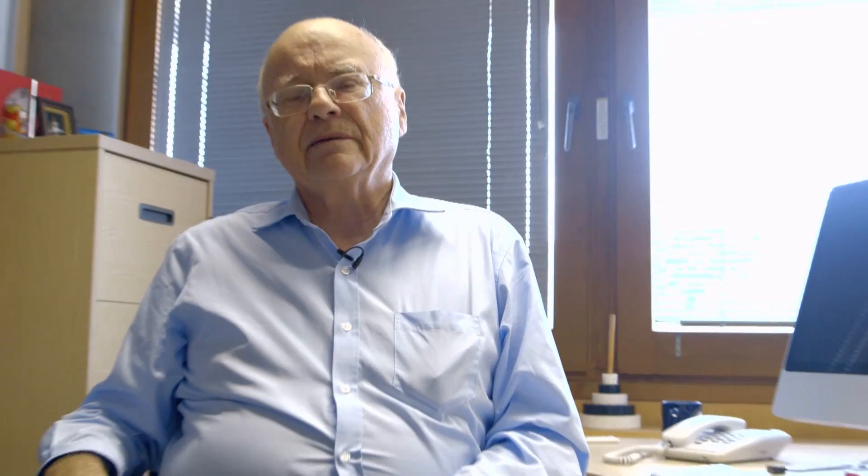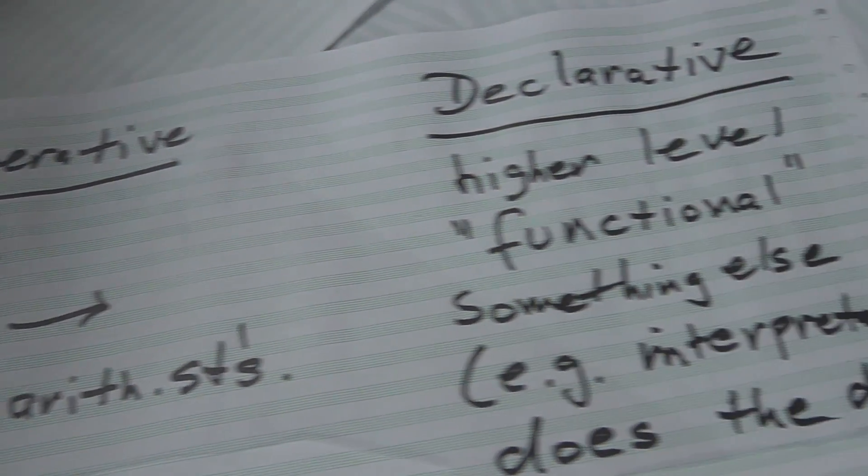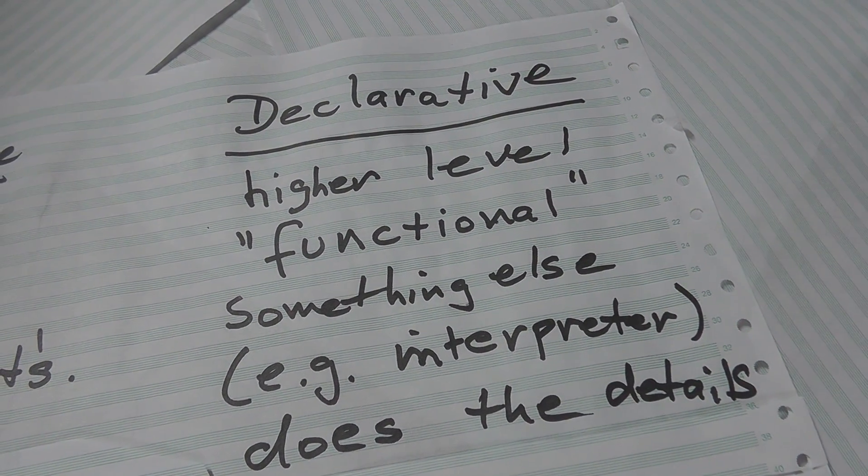In the imperative style you say how you are going to solve the problem — if this button is pressed then do this. The vast majority of programs that most people think of in terms of programming are done in this style. Now, what about declarative? Declarative is a more functional style of programming where the interpreter for your language does the details.